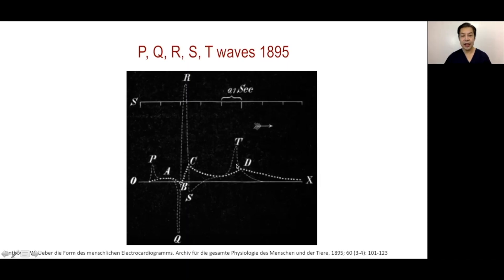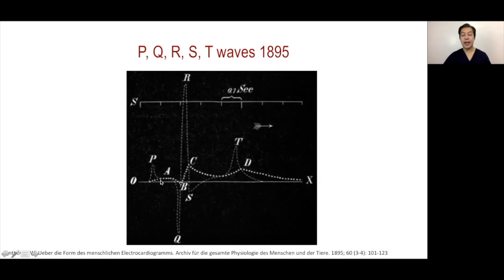They realized that the friction of the paper was limiting the deflection of the needles. By reducing the friction, they arrived at a different waveform — what we now know as the P wave, which is a positive deflection with troughs, followed by more deflections. Now we have P representing atrial depolarization, and the QRS complex.